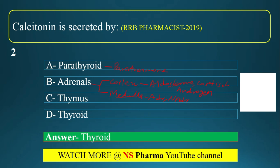The thymus secretes thymosin. The function of thymosin is to stimulate the development of T cells. We know that T cells and B cells are types of immune cells, and thymosin stimulates T cell development.